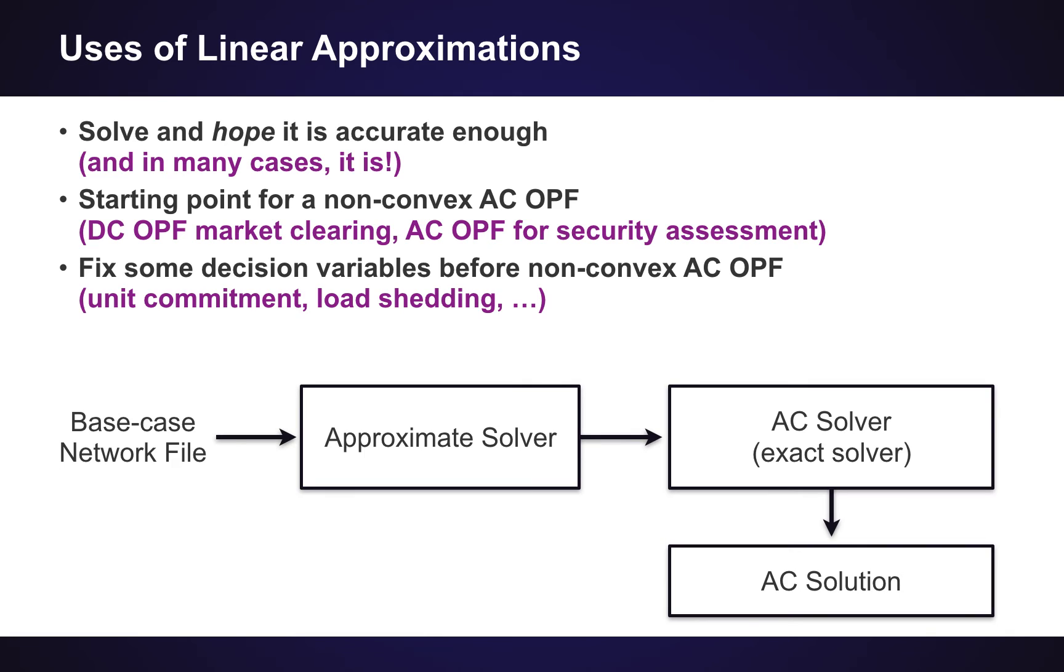And so how are we then using those linear approximations? Because clearly, we need to be a bit careful when we are using them. So maybe the most used approach is just to solve the problem using a linear approximation and just hope that the solution is accurate enough. And actually, in many cases, it is really good. Another possibility is to use the linear approximation as a starting point for a non-convex AC optimal power flow problem. And an important practical example of this is when we are using the DC optimal power flow for market clearing problems, which is typically done in the United States. So all power system markets that are liberalized are typically cleared using this DC power flow approximation. And then the solution that comes out of this market clearing is then fed into an AC optimal power flow problem, which is used to make sure that the solution that we have is actually going to be secure to use in operation and not violate any of the bounds that we need to observe in practical operations.